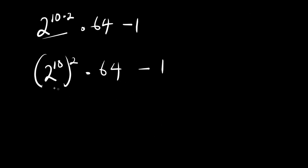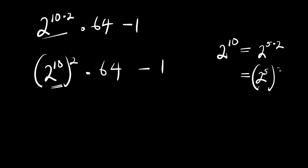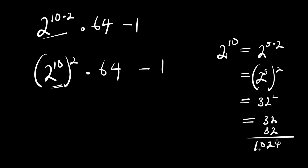So this gives us 2 to the power of 10, raised to the power of 2, times 64, minus 1. We can find the value of 2 to the power of 10: 2 to the power of 10 equals 2 to the power of 5 times 2 to the power of 5, which means 2 to the power of 5 is 32. So 32 squared is 32 times 32, which gives you 1024. So 2 to the power of 10 is 1024.